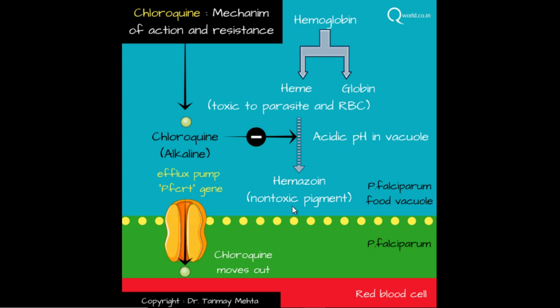For this conversion from heme to hemozoin, the acidic pH in the food vacuole plays a major role. Now, how chloroquine acts: chloroquine is taken up by the parasite and enters into the food vacuoles, which is where this reaction is happening.